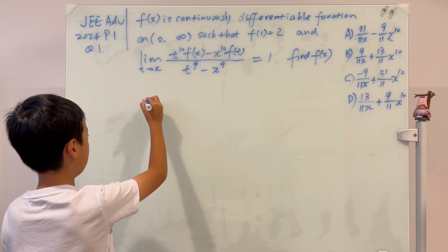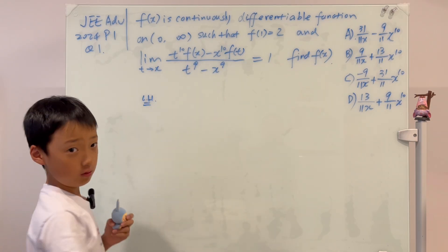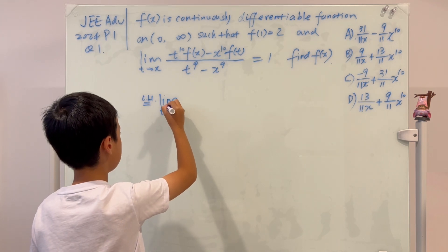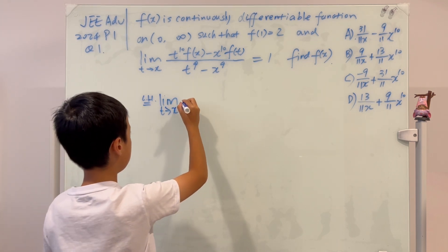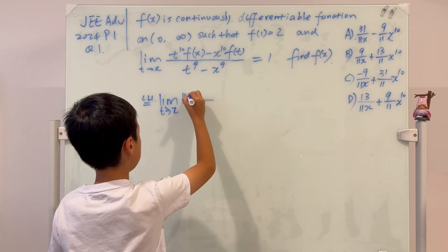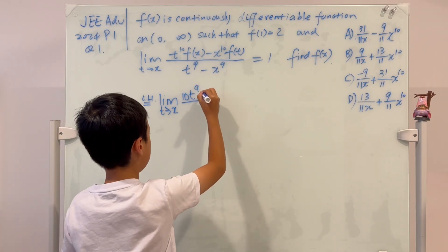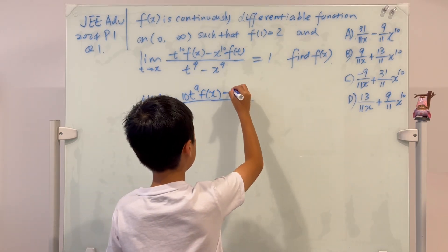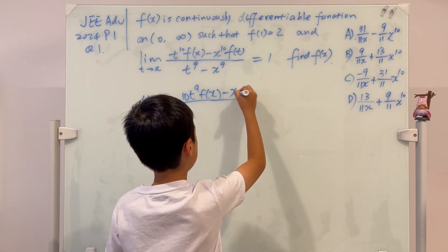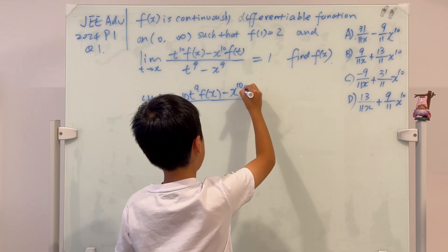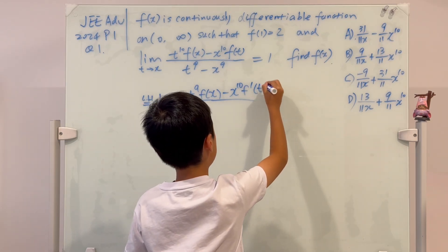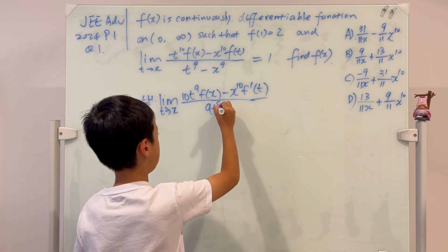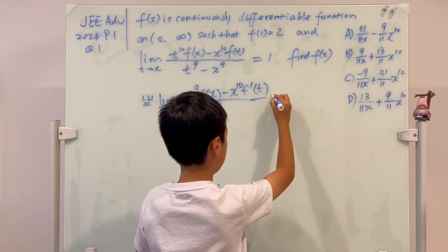Using L'Hôpital's rule, the limit as t → x becomes: 10t^9 · f(x) minus x^10 · f'(t), all over 9t^8. And this is equal to 1.